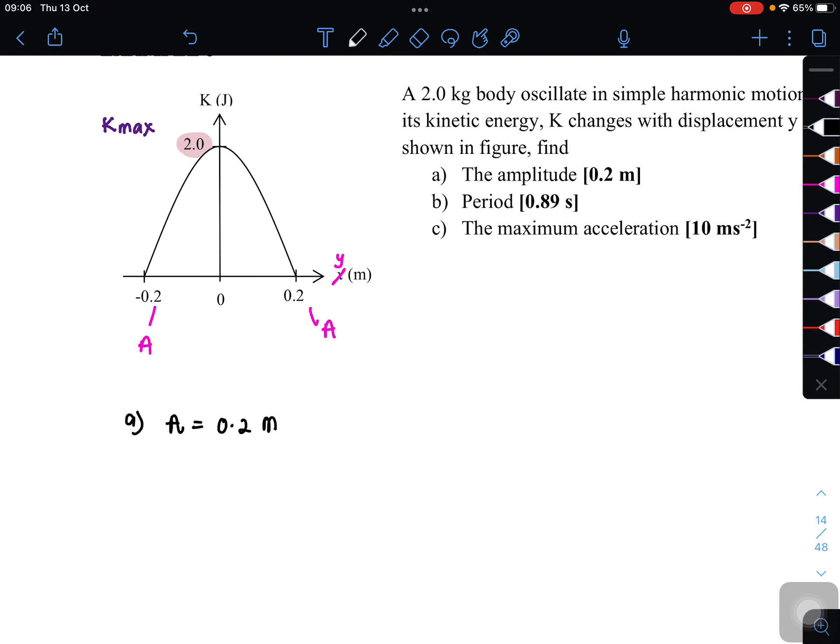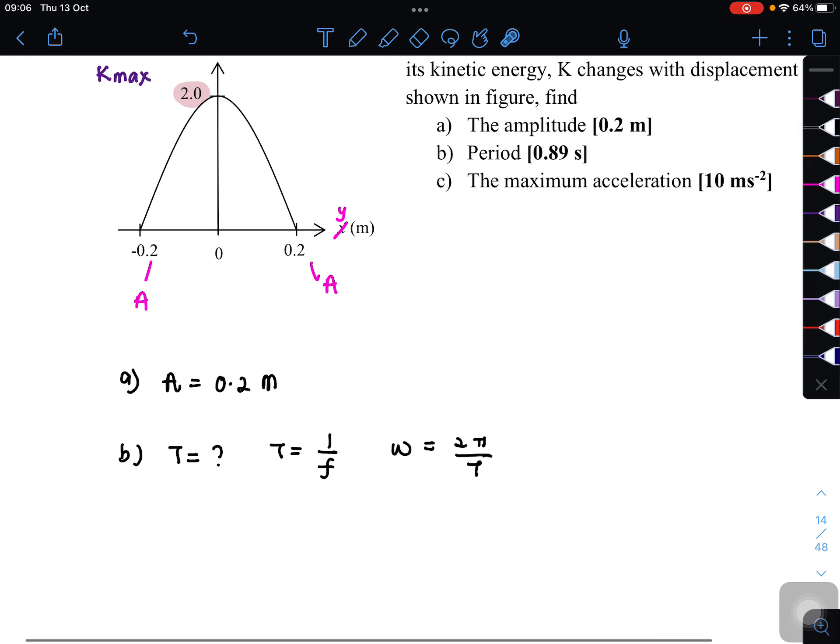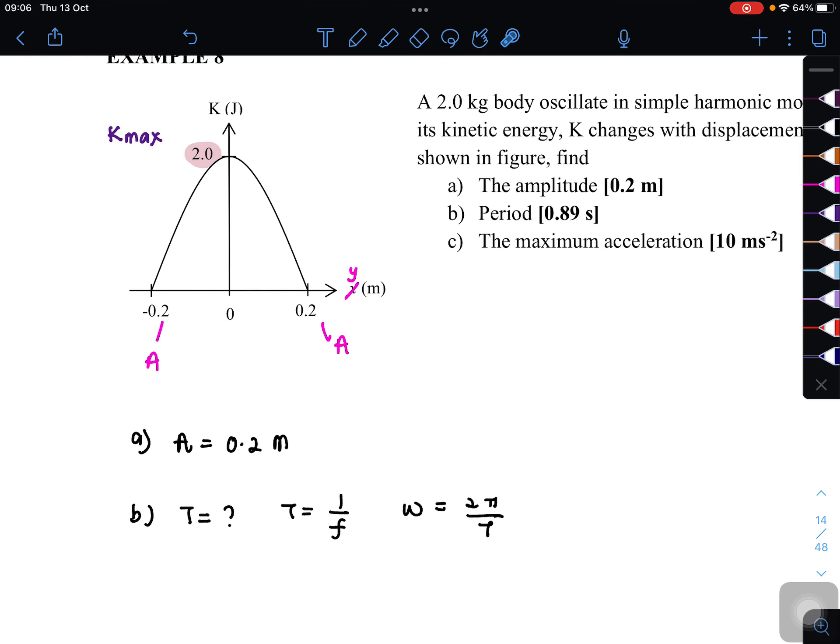Next one, we want to find the value for the period. So we want to find the value for T. And we know that T, kita ada 2 formula lah. Satu, 1 over F. Satu lagi kita boleh dapatkan daripada omega. Bermana omega adalah sama dengan 2 pi over T. So in order to find T, we can either use this one which is kita kena ada value for frequency ataupun use this one which is kita kena ada value for omega. So daripada graph tadi, kita boleh extract information which is kita boleh dapatkan amplitude.